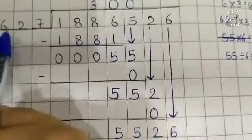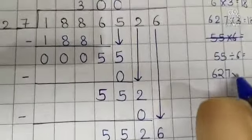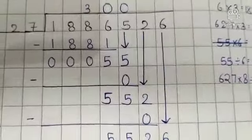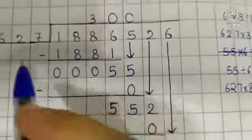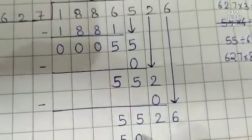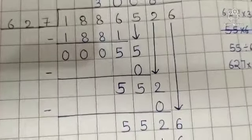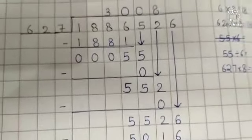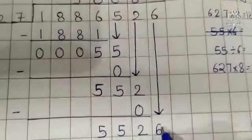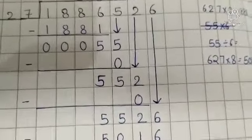So now multiply 627 by 8. So 627 multiplied by 8 equals 5016. So 627, 8's are 5016. Now subtract 5016 from 5526. 6 minus 6 is 0, 2 minus 1 is 1, and 5 minus 0 is 5.